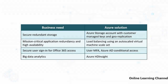For mission-critical app redundancy and high availability, you could configure load balancing using an auto-scaled virtual machine scale set. You configure threshold settings that determine when to scale out — adding VMs to handle workload — or scale in to reduce VM nodes when things quiet down. For secure user sign-in for Office 365, you can enable multi-factor authentication and configure Azure AD conditional access. For big data analysis, solutions like Azure HD Insight can be used.